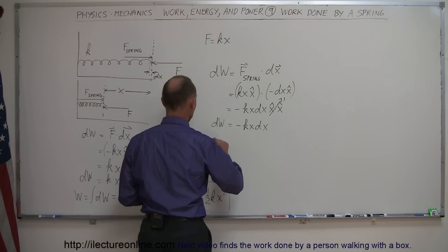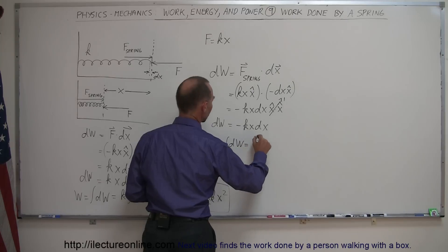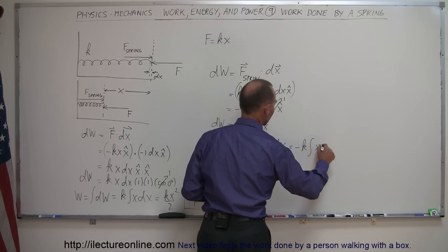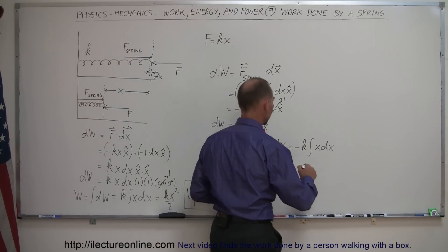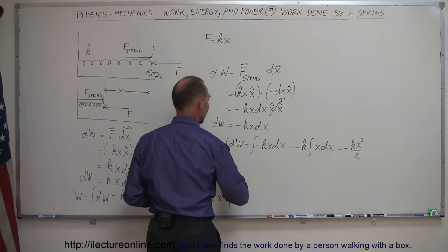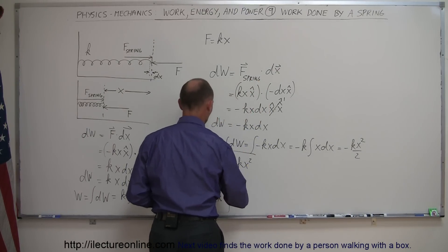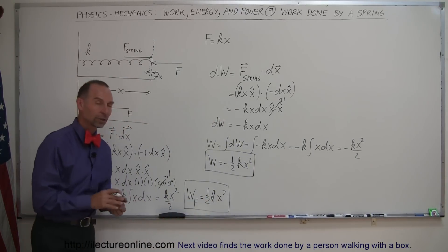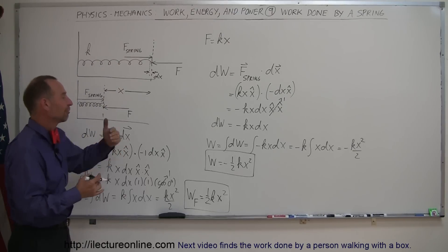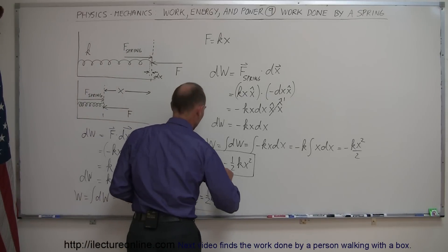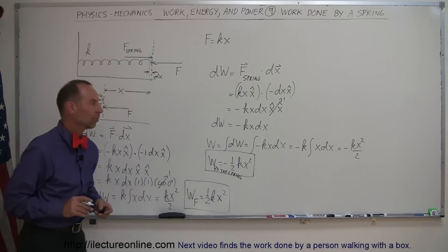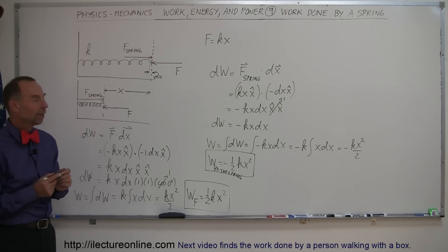Integrating: work equals the integral of minus kx dx. The minus k comes out of the integral, giving minus k times x-squared over 2, so the work done by the spring equals minus one-half kx-squared. This is equal in magnitude but opposite in sign to the work done by the compressing force. Since the spring is only a reactionary force and can't contract itself, it does negative work.